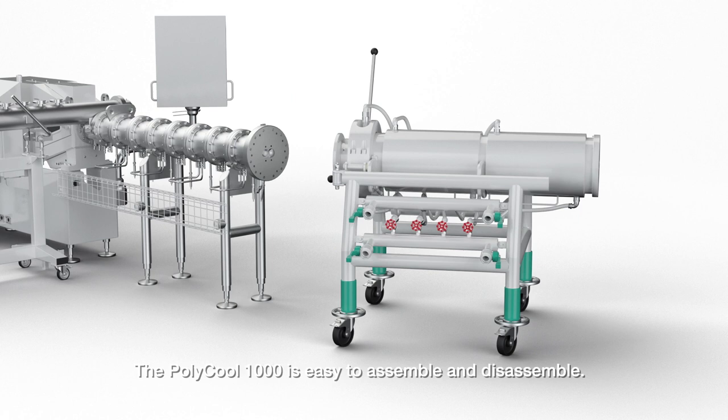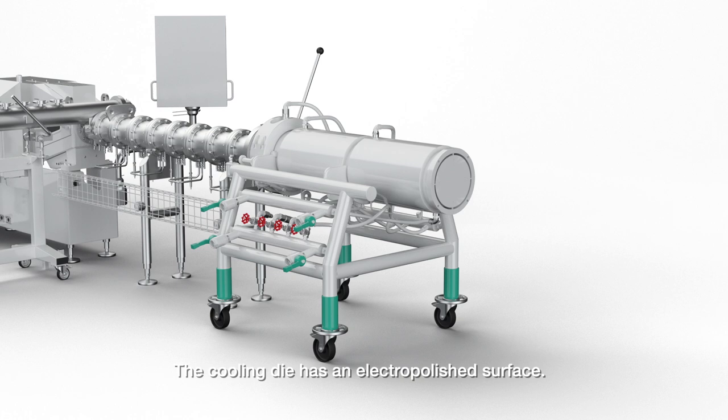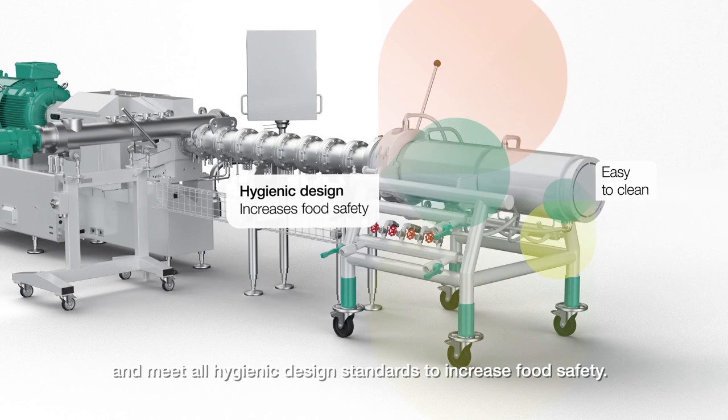The Polycool 1000 is easy to assemble and disassemble. The cooling die has an electro-polished surface. The extruder and the Polycool 1000 are easy to clean and meet all hygienic design standards to increase food safety.